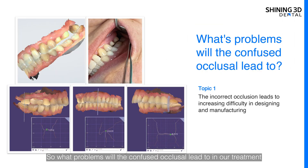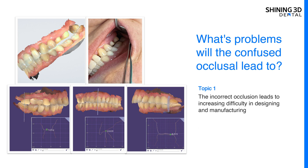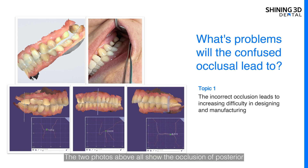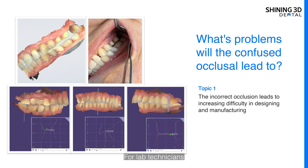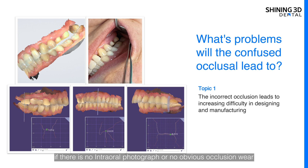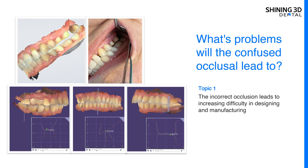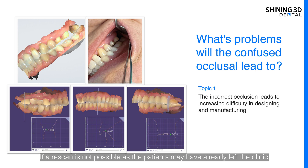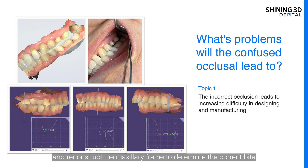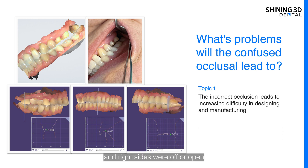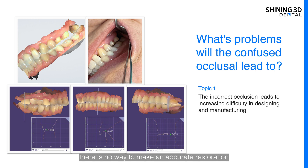So what problems will the inaccurate occlusion lead to in our treatment? Topic number one: the two photos above show the occlusion in the posterior zone is a little open while the occlusion of the anterior is suitable. For lab technicians, if there is no intraoral photograph or no obvious occlusion wear, it is hard to make a judgment as to whether the scan data is consistent with that in the mouth. If a re-scan is not possible, as the patient may have already left the clinic, the most common method is to print out the model and reconstruct the maxillary frame to determine the correct bite. The lower three photos show all slides, including the left, front, and right sides, were all open. Without the accurate value of the empty occlusion, there is no way to make an accurate restoration.